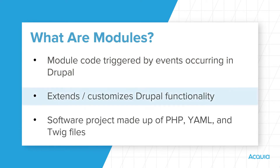There are three types of Drupal modules: core modules, contributed modules, and custom modules. Core modules implement standard Drupal functionality such as blocks, views, and taxonomy. Contributed modules provide a vast range of pre-built, peer-reviewed features you can add to implement extra functionality in your site — there are hundreds of contributed modules. With custom modules, you create specific business logic functionality that is not generally available through community module contributions.